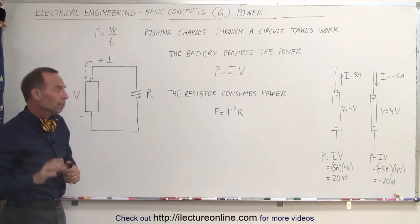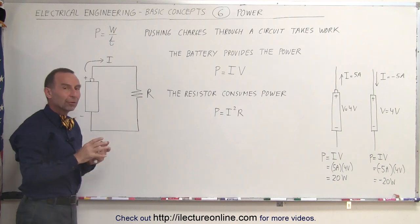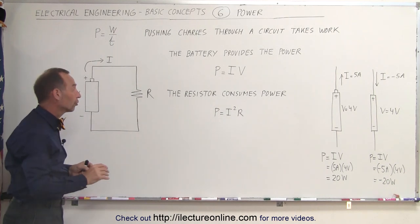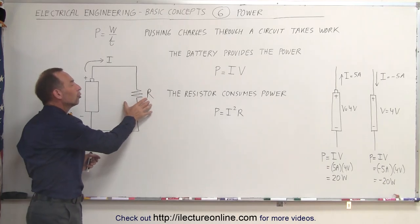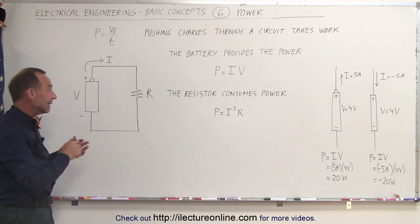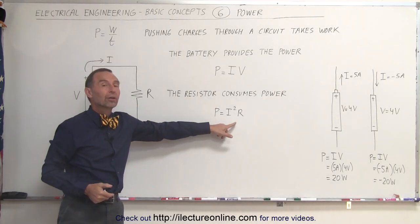Now, there are other components in the circuit that the current is driven through. And the more resistance you have in the circuit, the harder it is to push the charges through. And the resistor, therefore, consumes that power. The equation that we use to indicate how much power a resistor consumes is the current squared times R.